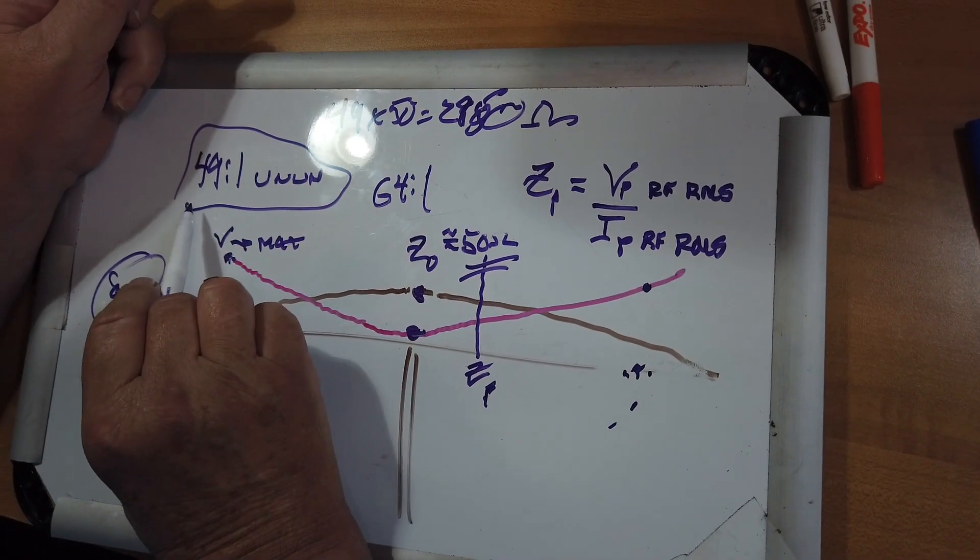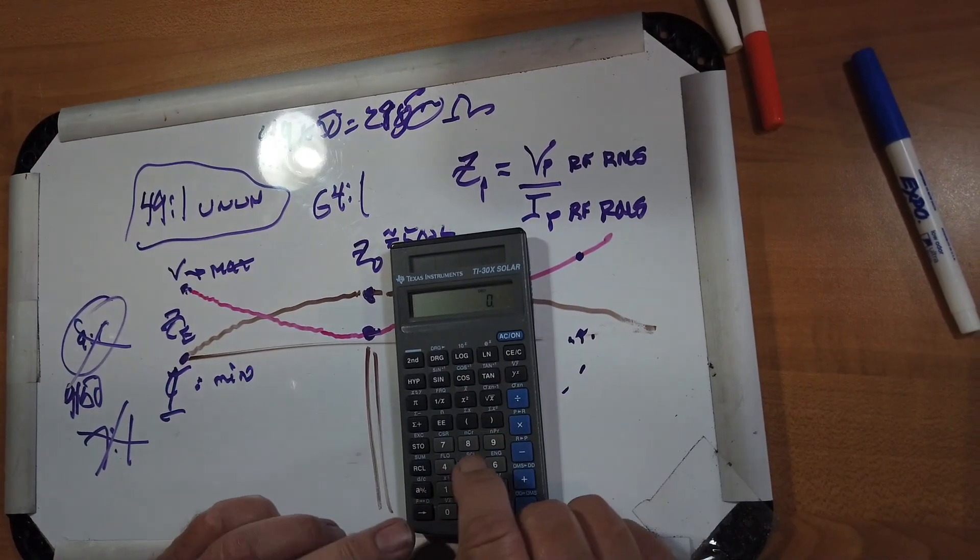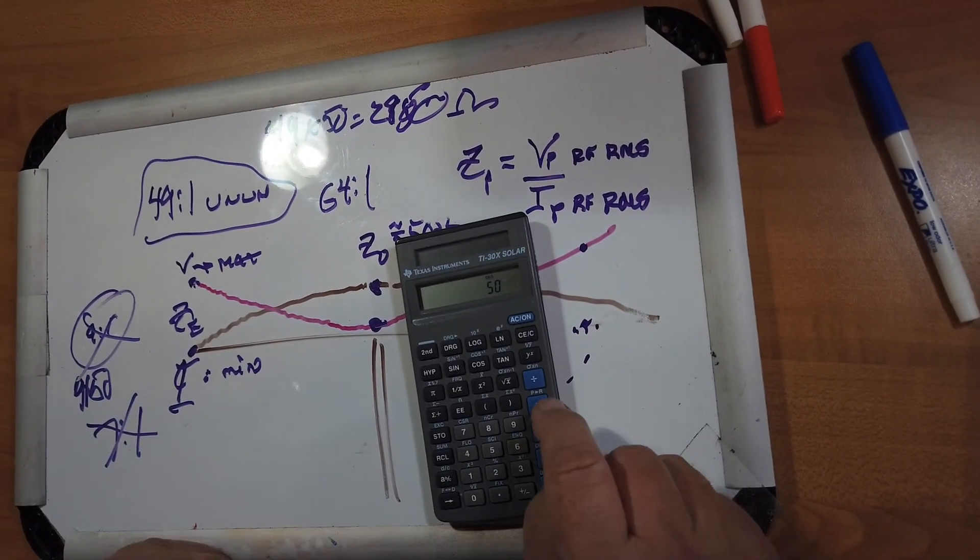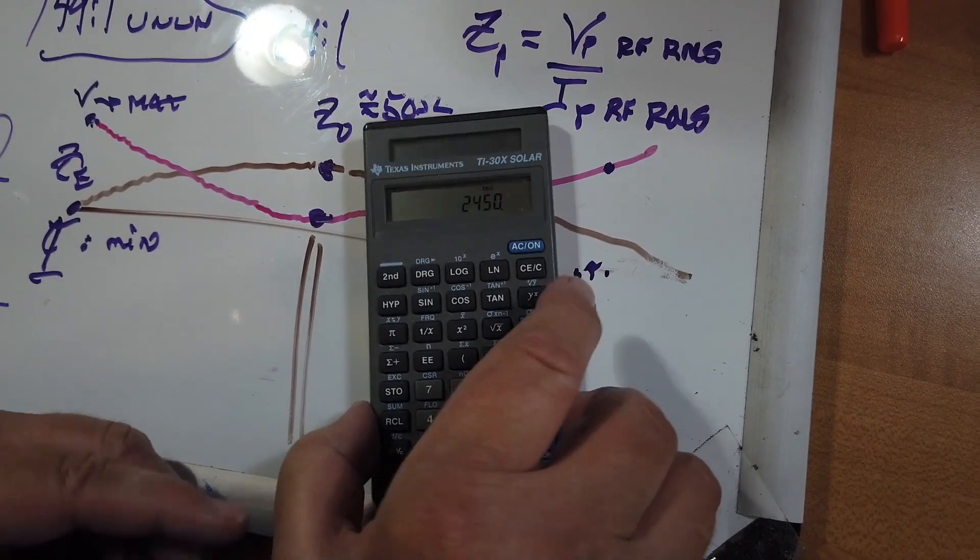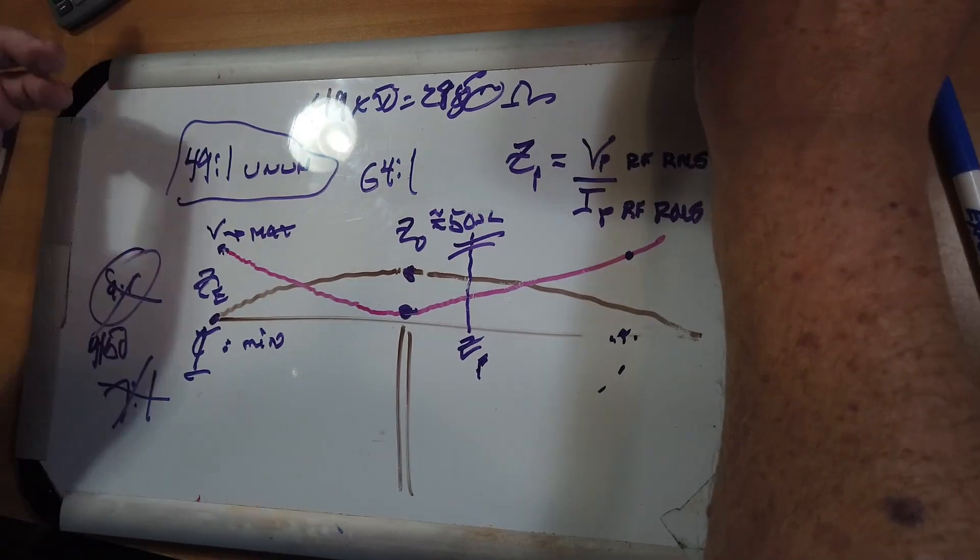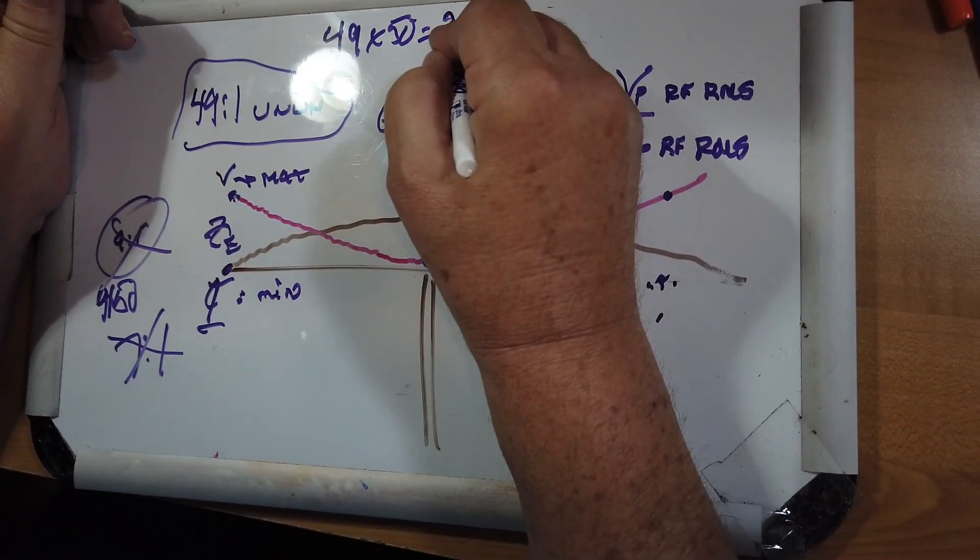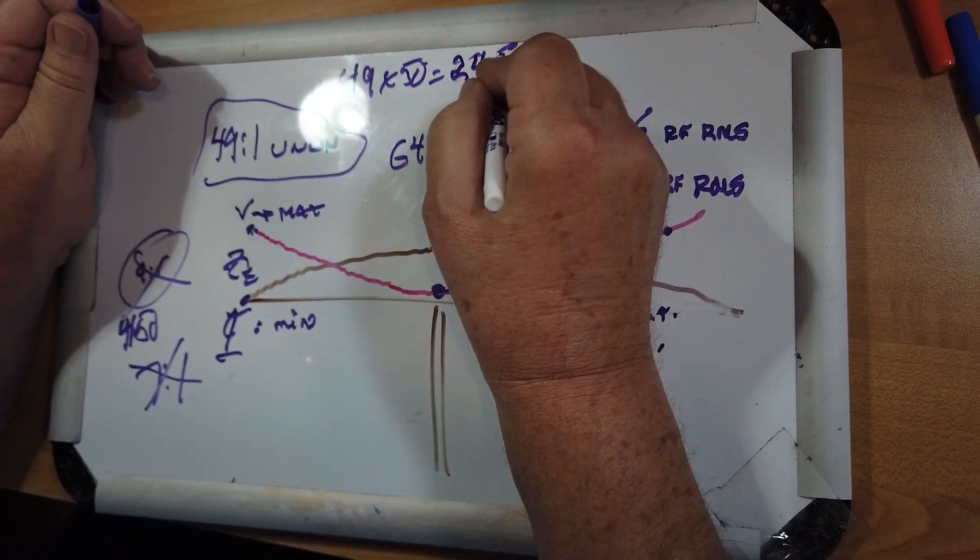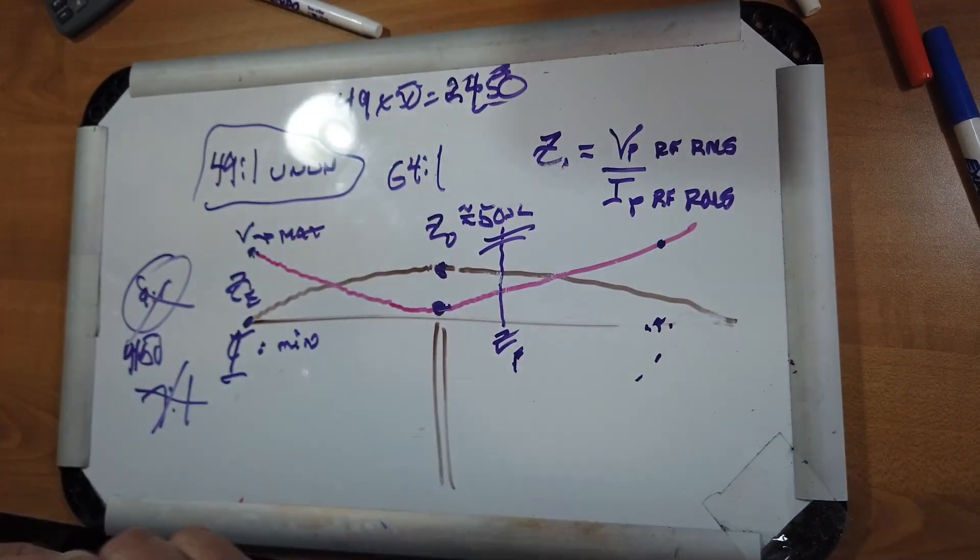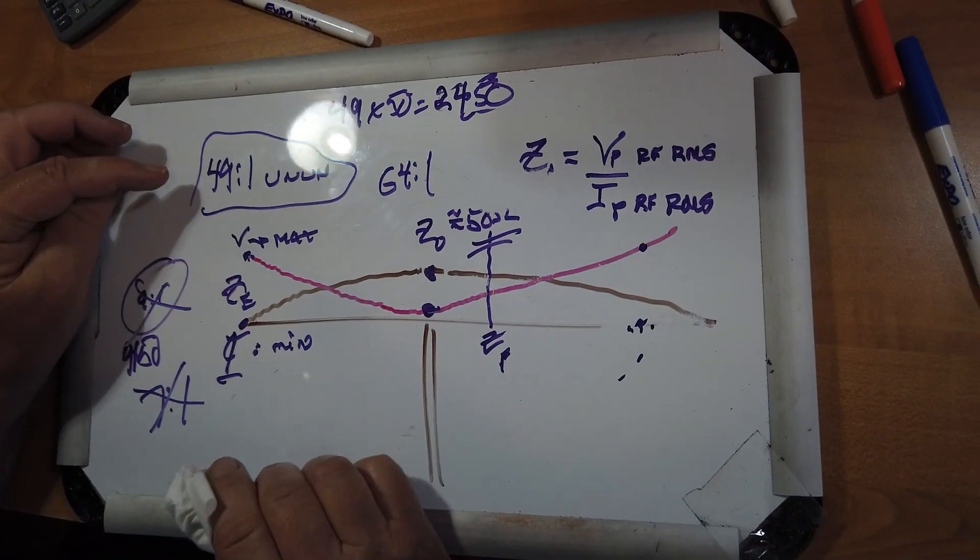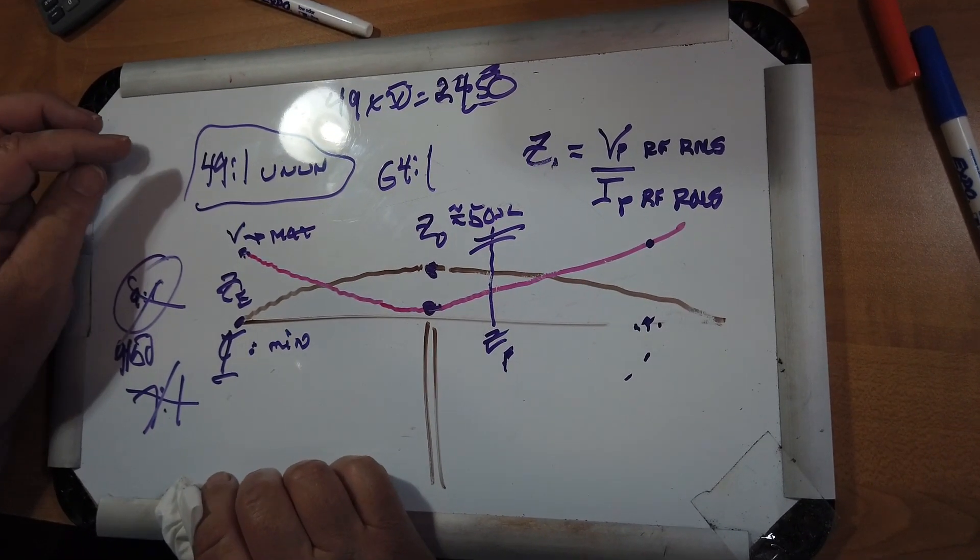The 49 to 1 is the same. You take 50 and multiply that by 49, that's 2,450 ohms here. And that about works. And so 49 to 1 is less expensive in terms of wire than a 64 to 1.